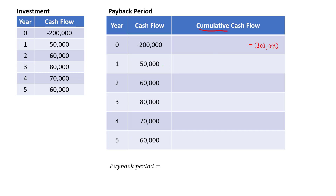In year one, the project will generate a cash inflow of $50,000. So if you take negative $200,000 plus $50,000, cumulatively the company still needs to recover $150,000. By the following year, if you take negative $150,000 plus $60,000, that will be negative $90,000.